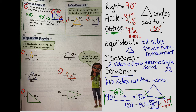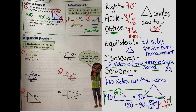Example four: classify each triangle by its sides and then by its angle. The sides are seven inches, seven inches, and nine and nine-tenths inches. I have two sides that are the same and one side that's different, so this is an isosceles triangle. Now for the angles, I see the little box inside the triangle — that's my tip-off that it's a right triangle. So this is a right isosceles triangle, written as 'right, isosceles.'